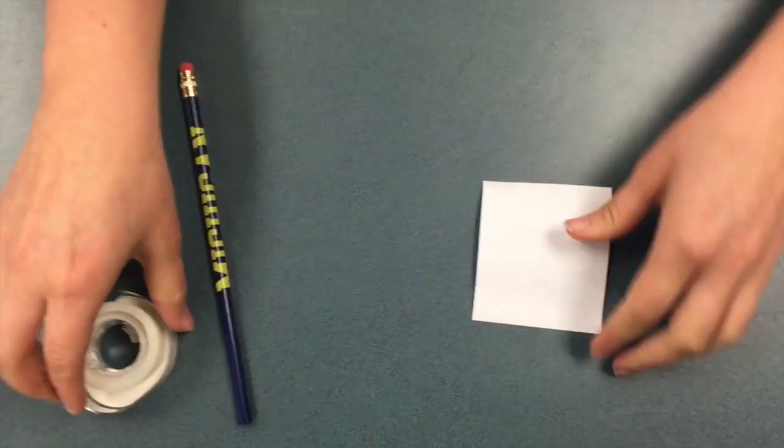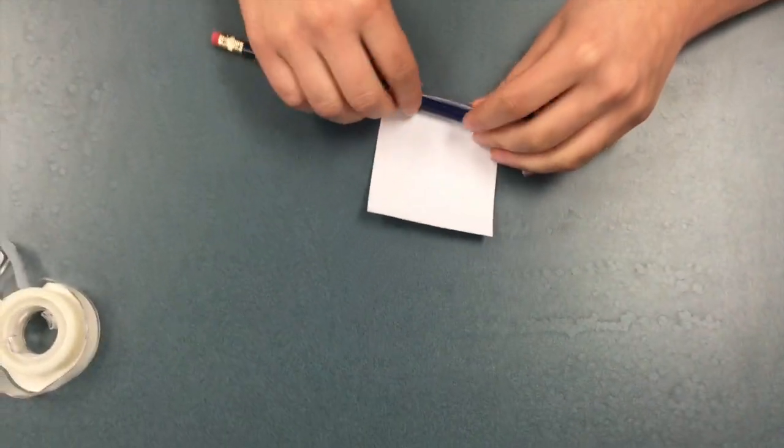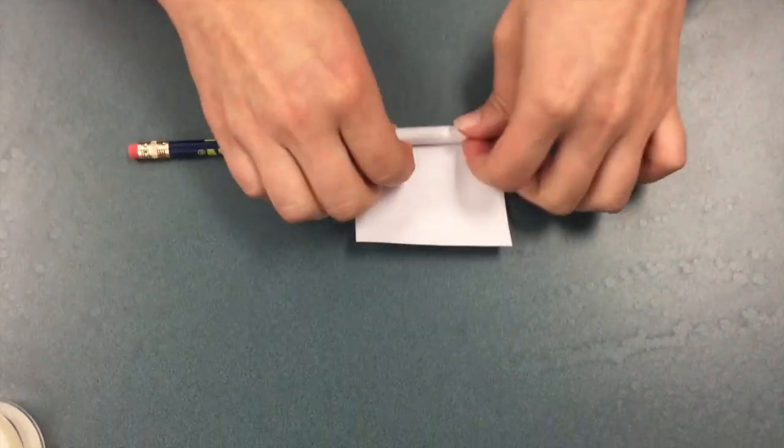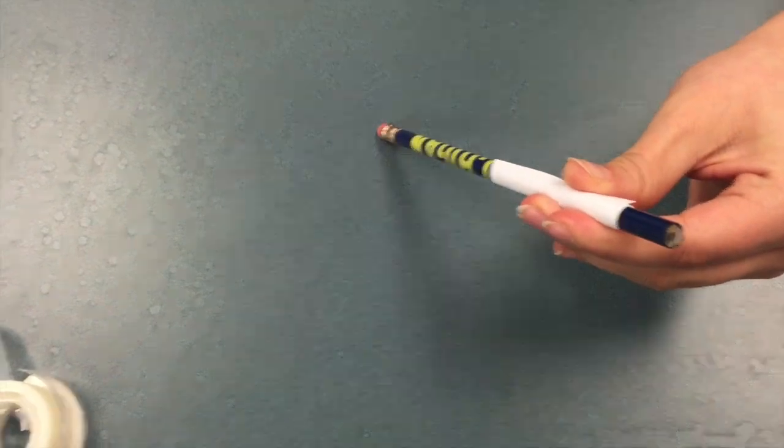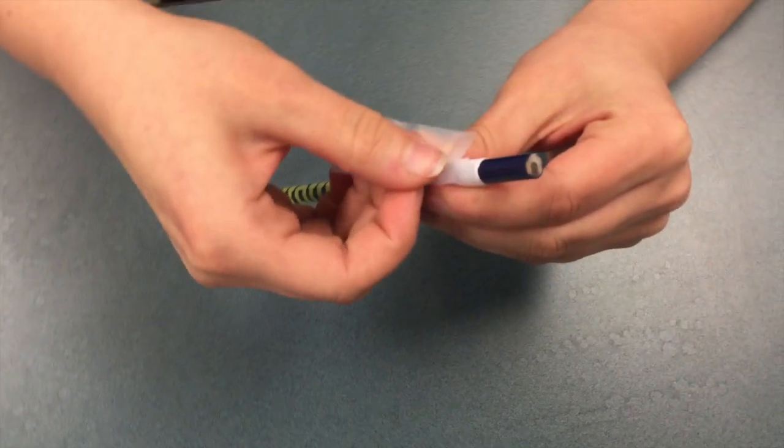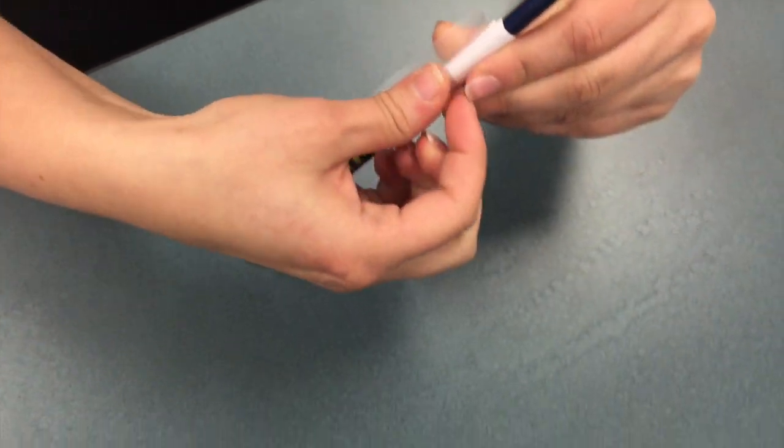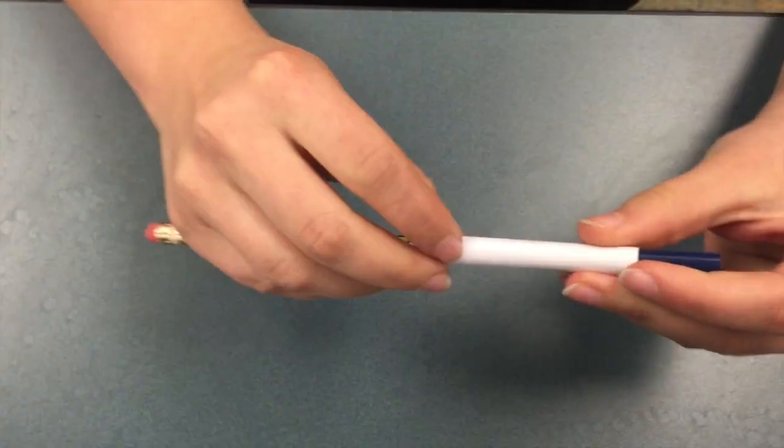So the first thing you do is you take your bit of paper and you wrap it around your pencil. Tight, but not too tight that you can't get it off the pencil. Then you take a piece of tape and you tape that tube shut, just like that.